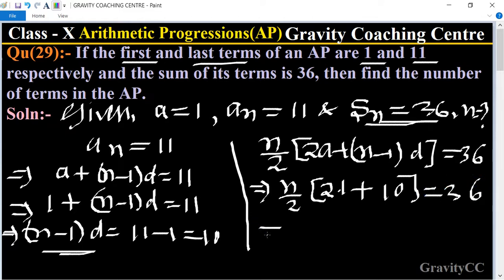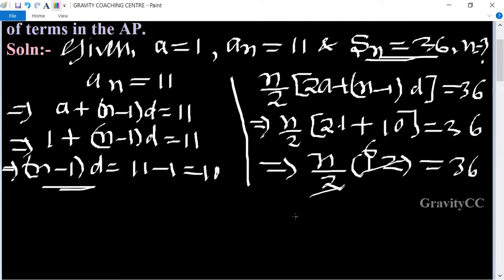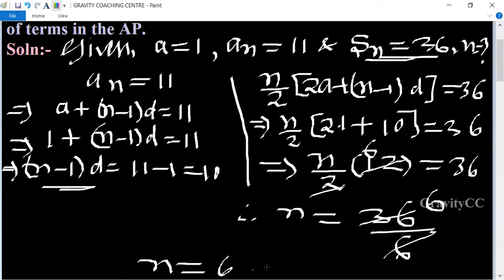So n by 2 times (2 plus 10) equals n by 2 times 12 equals 36. Therefore, n equals 36 divided by 6, so n equals 6, which is the required answer.